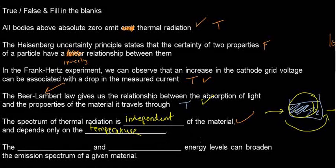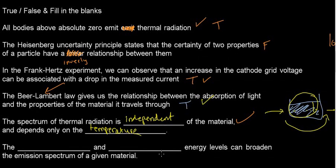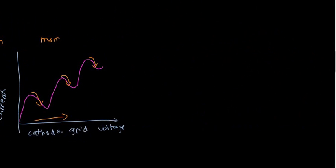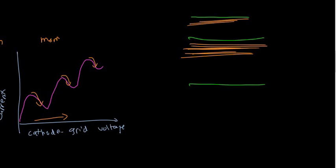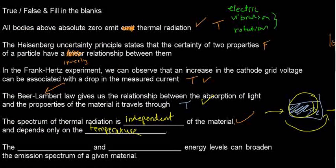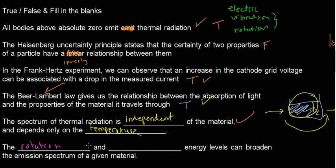Fill in the blank: something and something energy levels can broaden the emission spectrum of a given material. We know there are three ways for molecules to lose energy: electronic transitions, vibration, and rotation. So if I have electronic energy levels and there is also a way to lose energy via rotational or vibrational transitions, an excited electron doesn't have to drop directly between electronic levels — it can stop at intermediate rotational or vibrational levels.